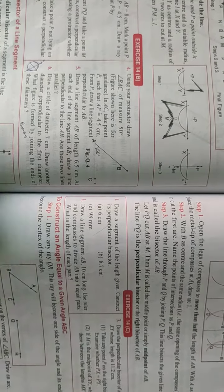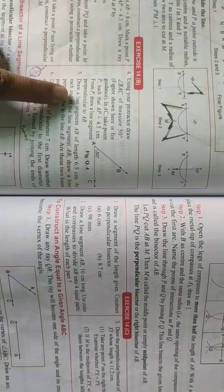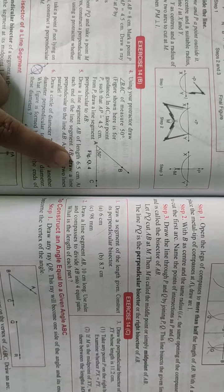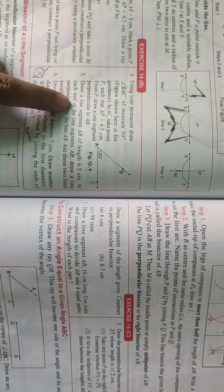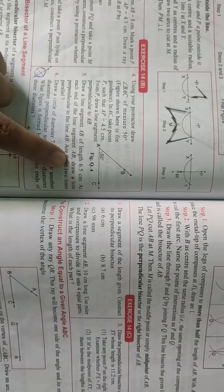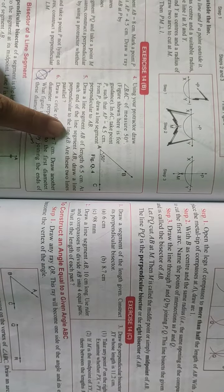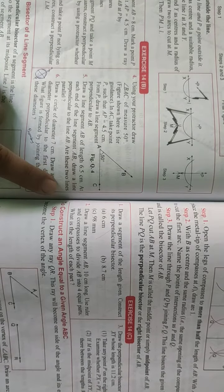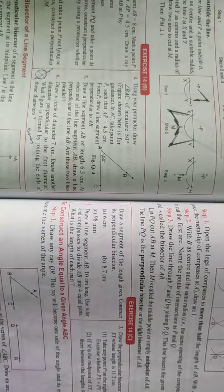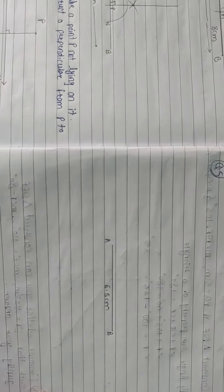Good morning students, this is question number 5 from exercise 14B. Draw a line segment AB of length 6.5 centimeters. At each end of the line segment AB, draw a line perpendicular to line AB. Are these two lines parallel? So students, the question is in your textbook.